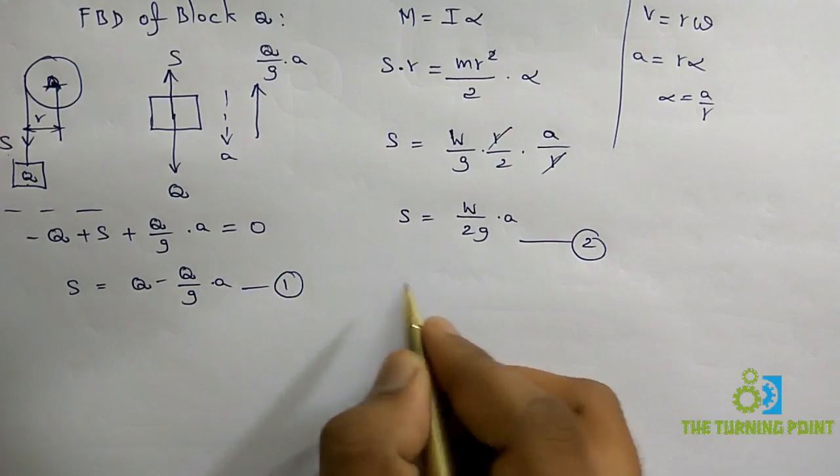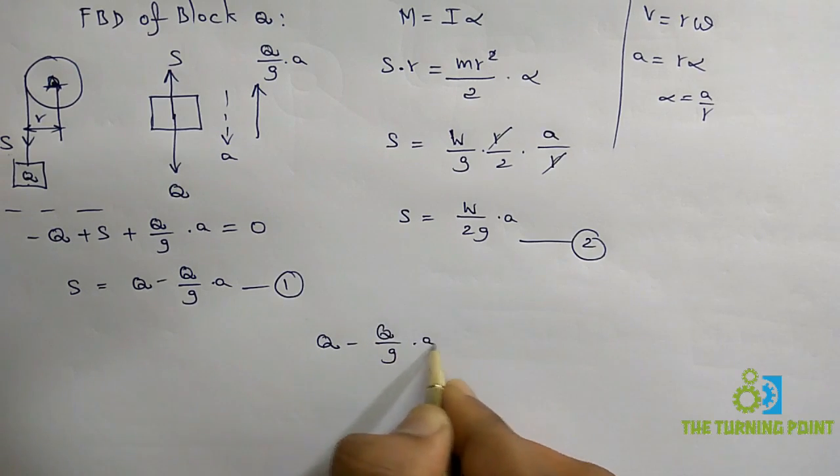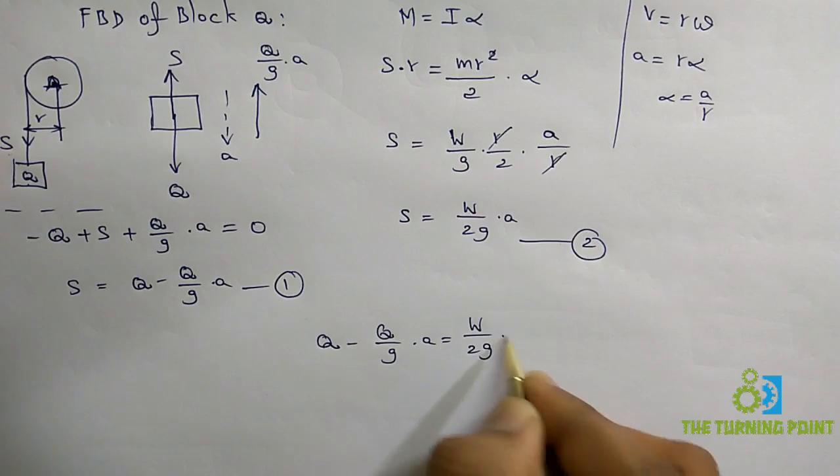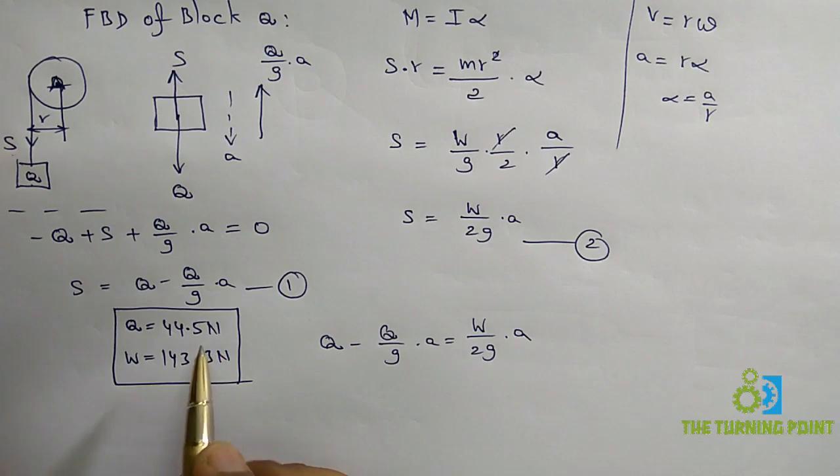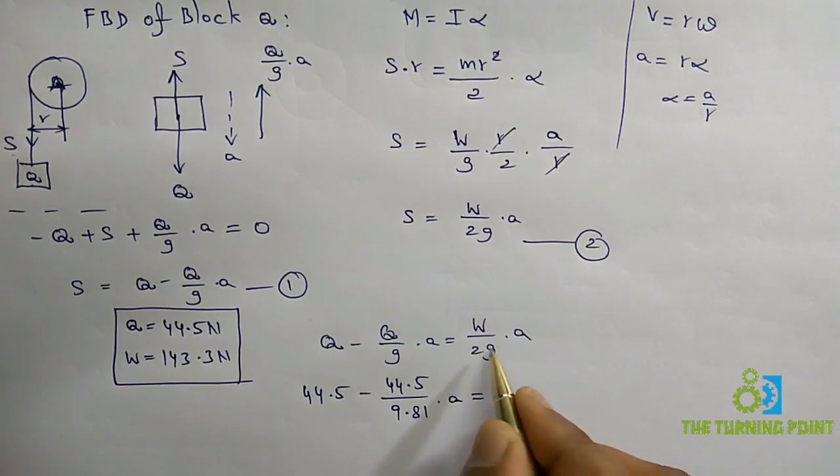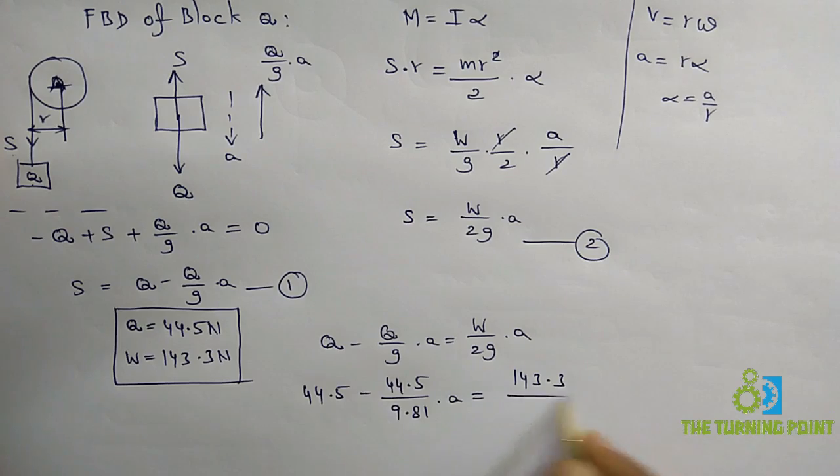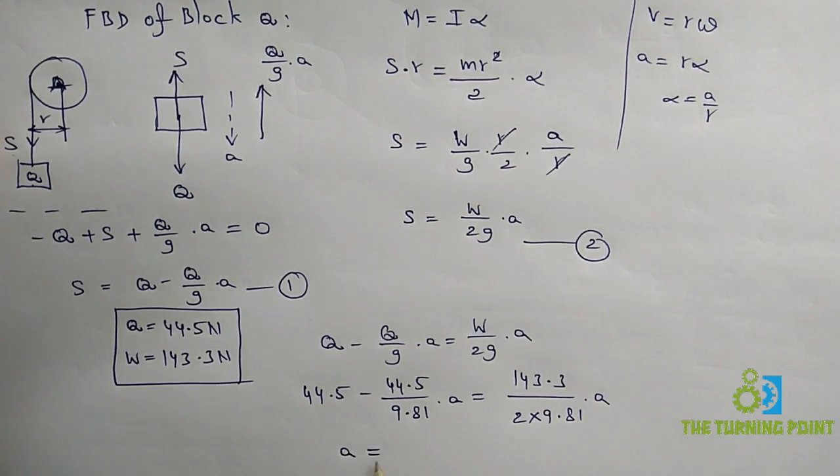From equations 1 and 2, I can equate both. So that means Q minus Q/G into A equals W/2G into A. Q equals 44.5 N, given in the question, and weight of the pulley is 143.3 N. Substitute here: 44.5 minus 44.5 divided by 9.81 into A equals 143.3 divided by 2 into 9.81 into A. Here the only unknown is acceleration.